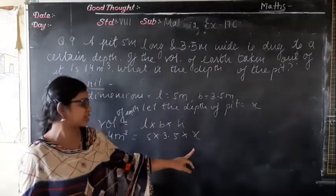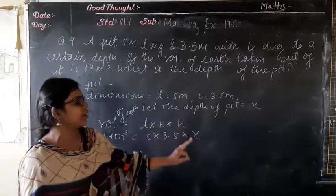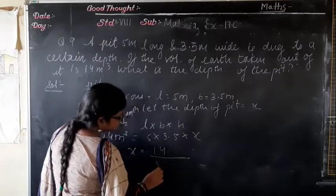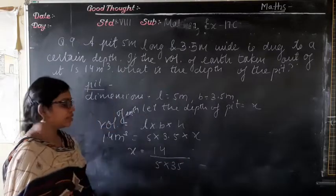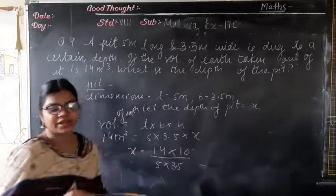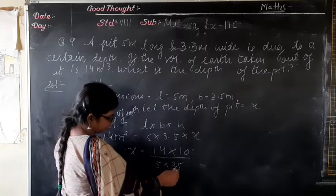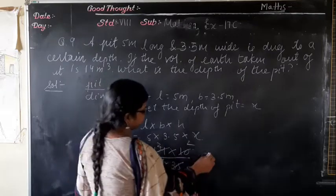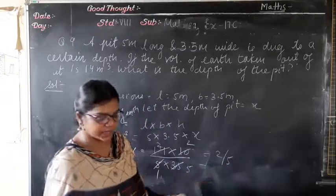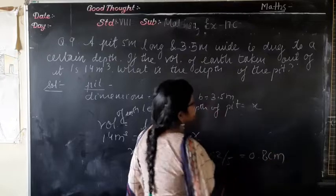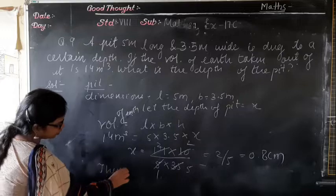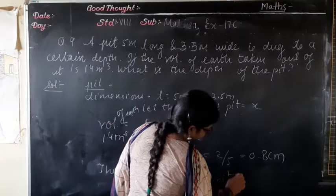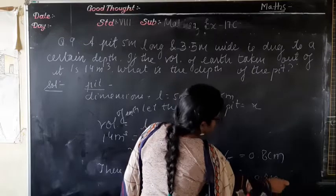Volume = L × B × H gives 5 × 3.5 × x = 14. So x = 14 ÷ (5 × 3.5) = 14 ÷ 17.5. Multiplying numerator and denominator: x = 140 ÷ 175 = 0.8 meters. The depth of the pit is 0.8 meters.